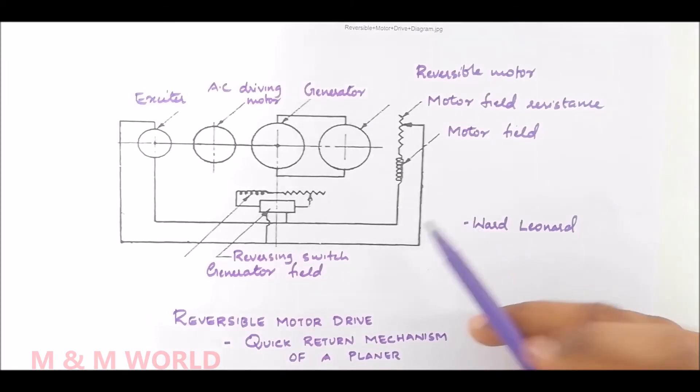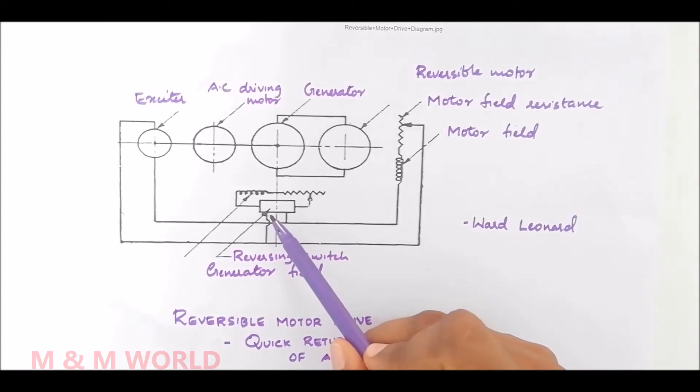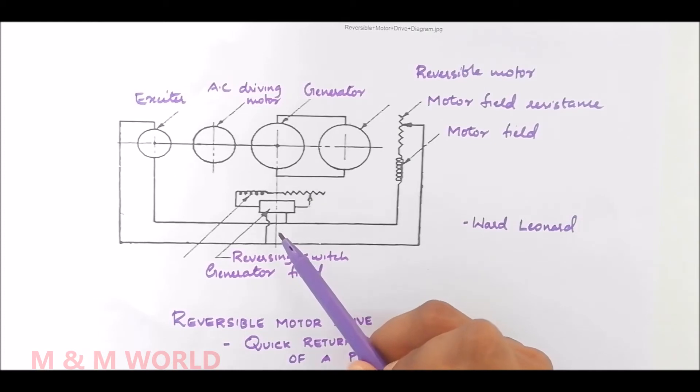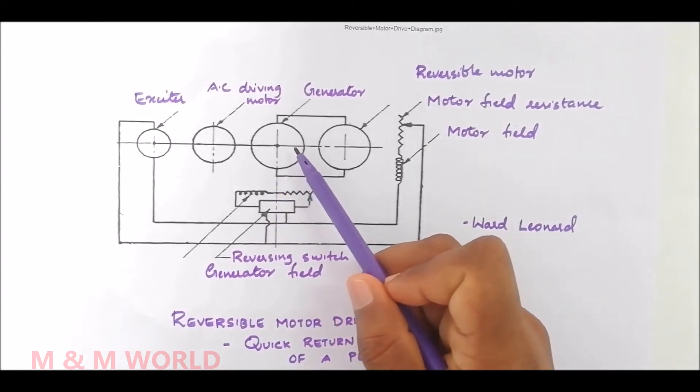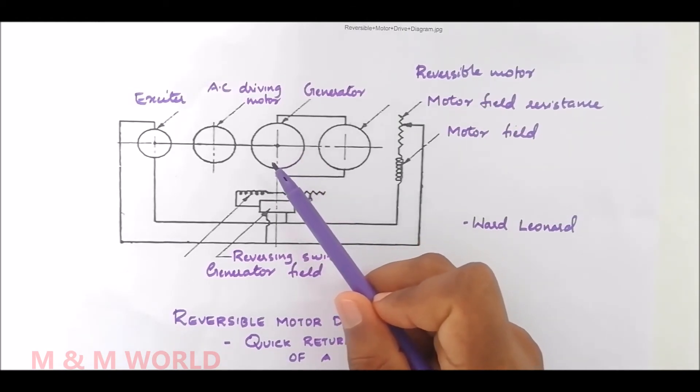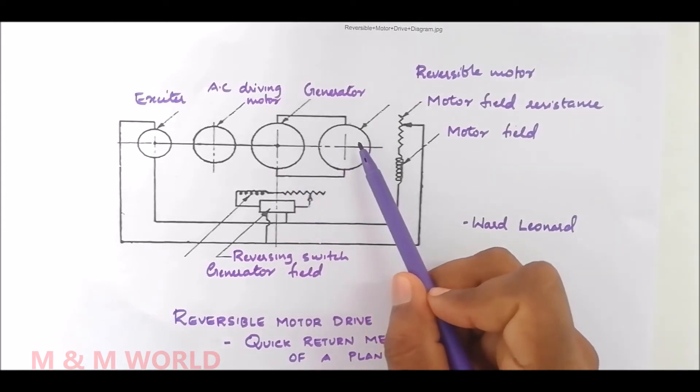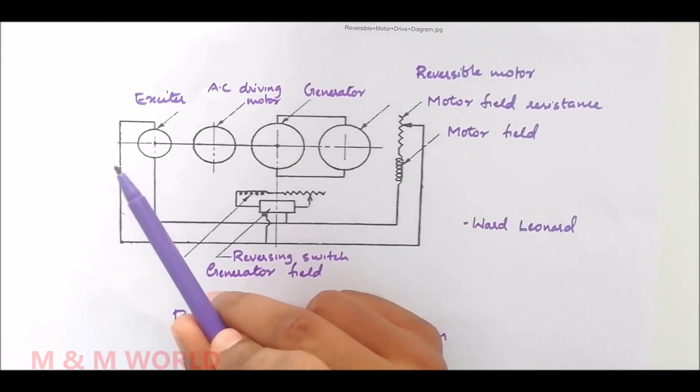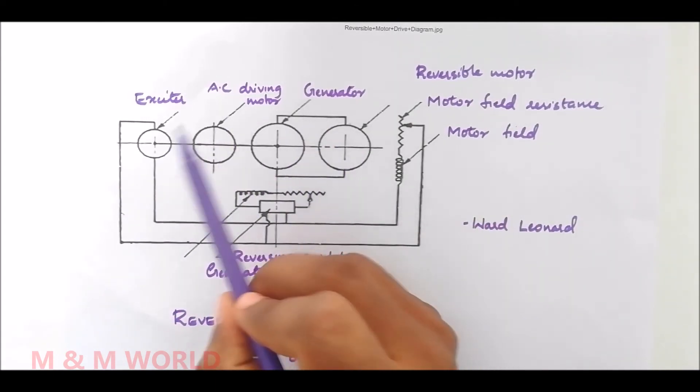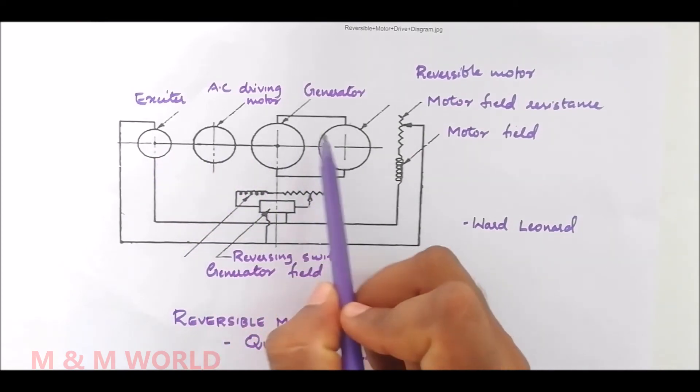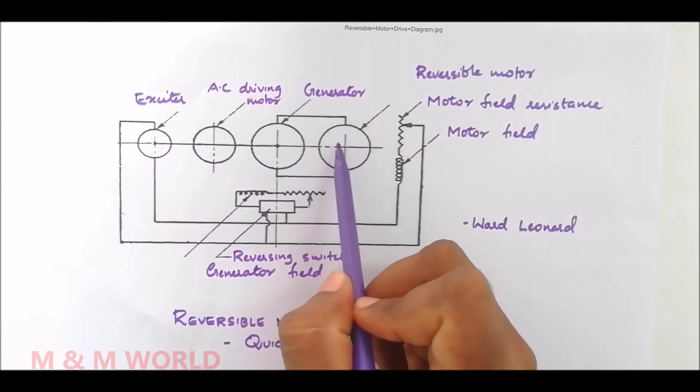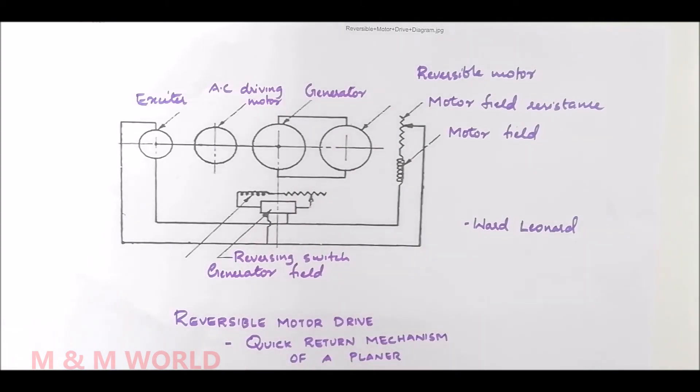At the end of the stroke, a trip-down operates the reversing switch, which reverses the field current in the generator so that the polarity of the armature current in the reversible motor is reversed, while the motor field current continues to receive current from the exciter at the same polarity.